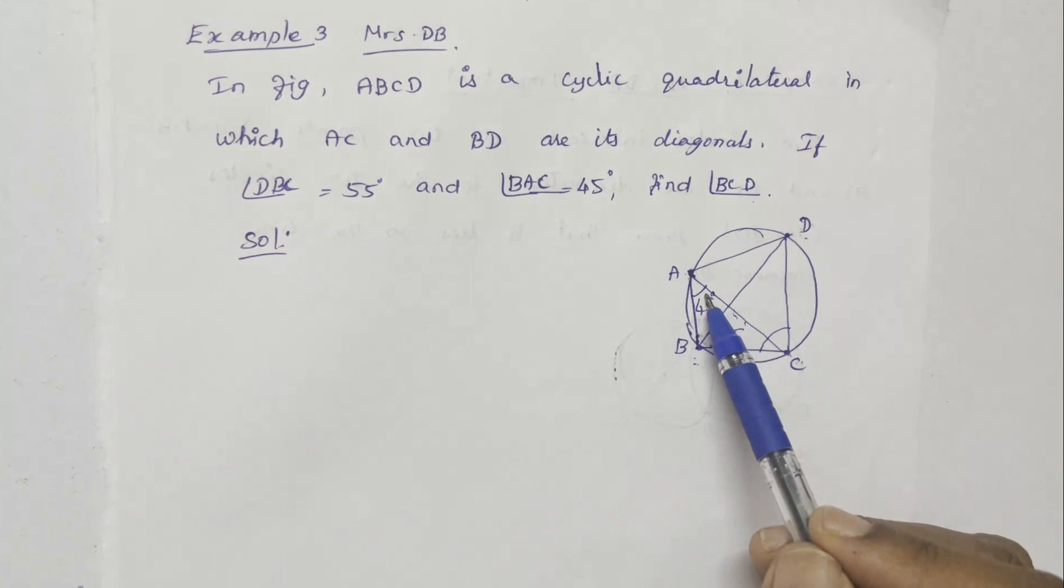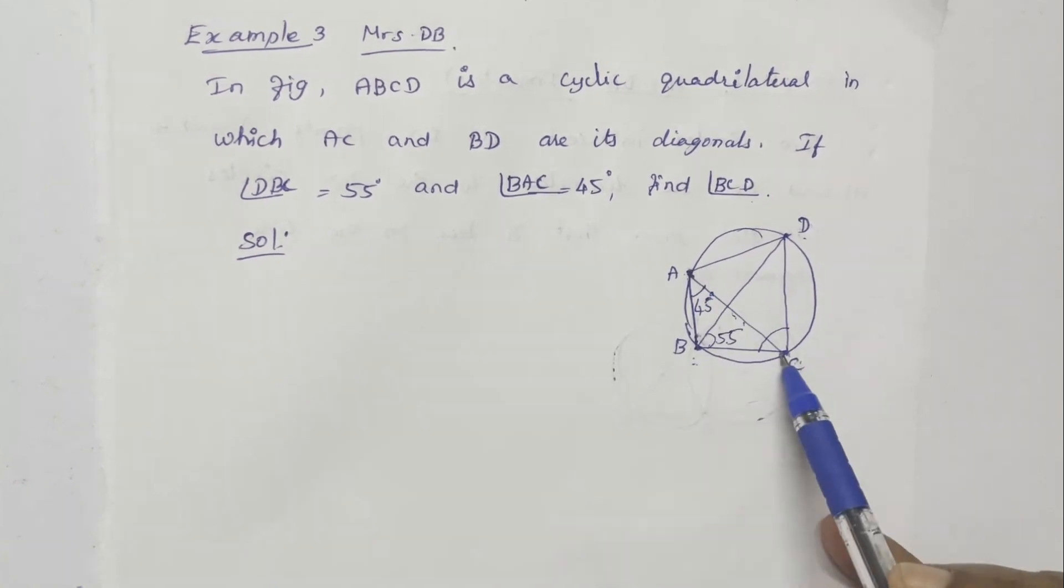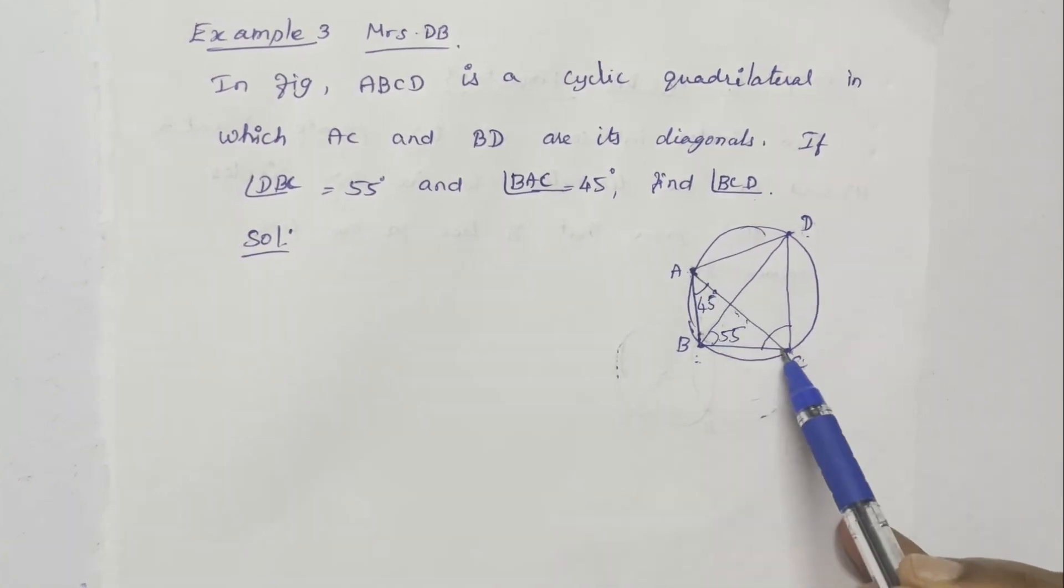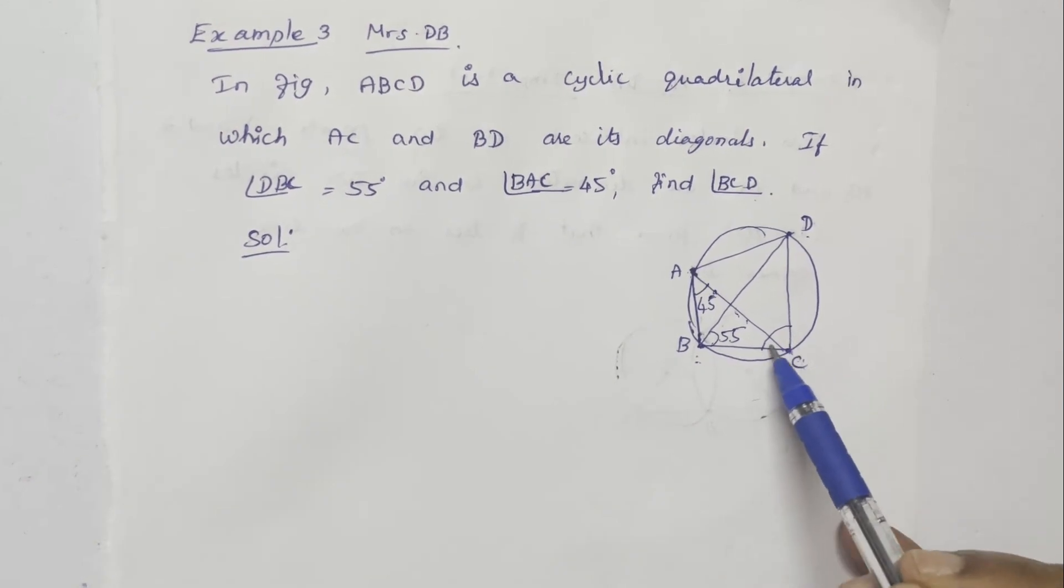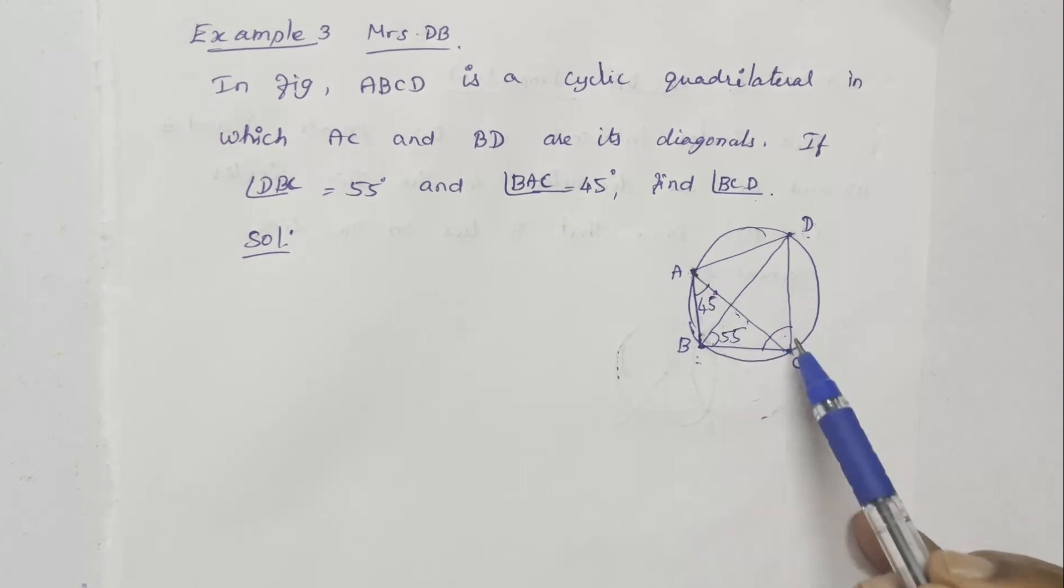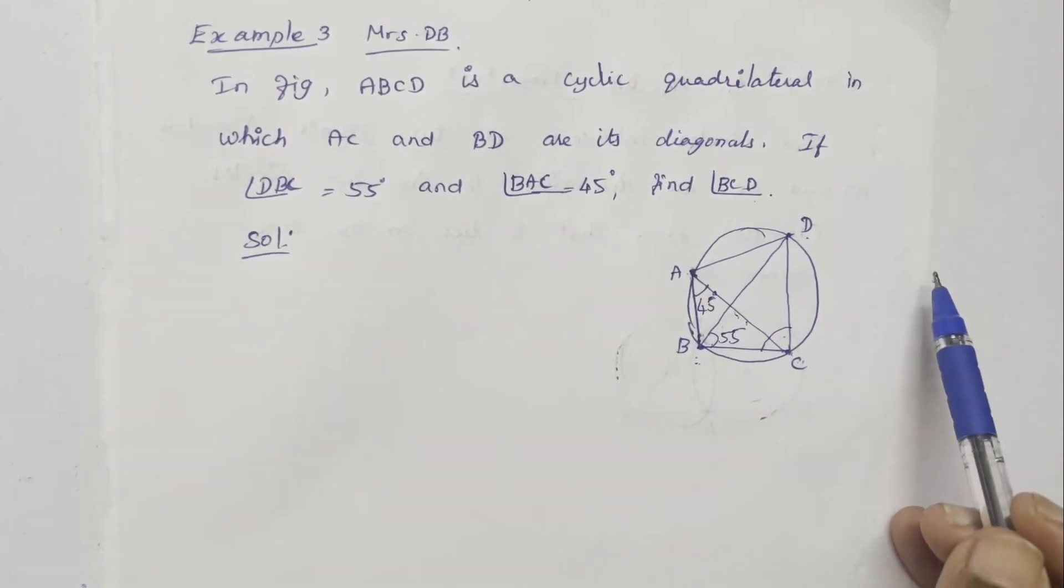If opposite angles in the cyclic quadrilateral sum to 180 degrees, we can use this property. We can calculate using this value plus this one equal to 180 degrees.